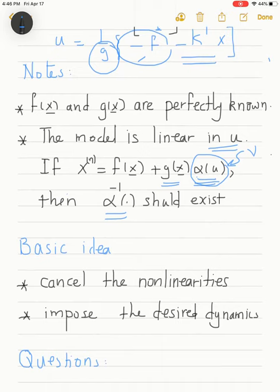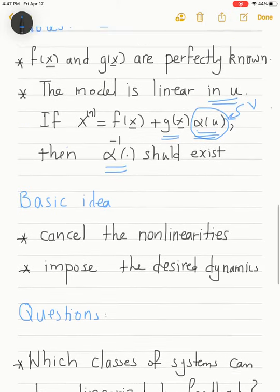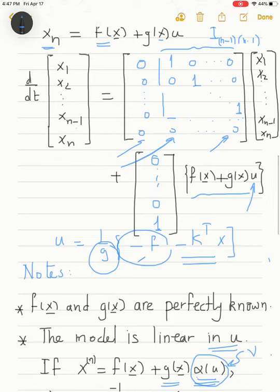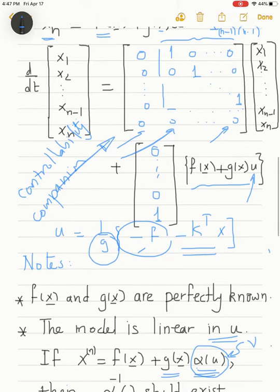These are very simple steps to convert the system from its nonlinear form to a stable linear form. However, we have to answer some questions: which classes of systems can be linearized by feedback? Is it applicable to any system? The procedure was applied to a system in a specific form — the controllability form, or companion form — so we must ask whether any nonlinear system can be converted to that form.